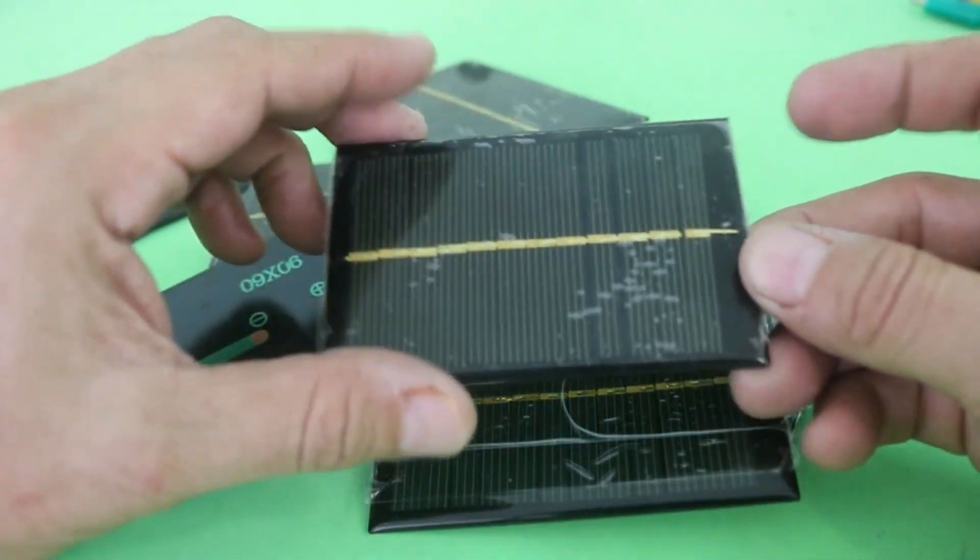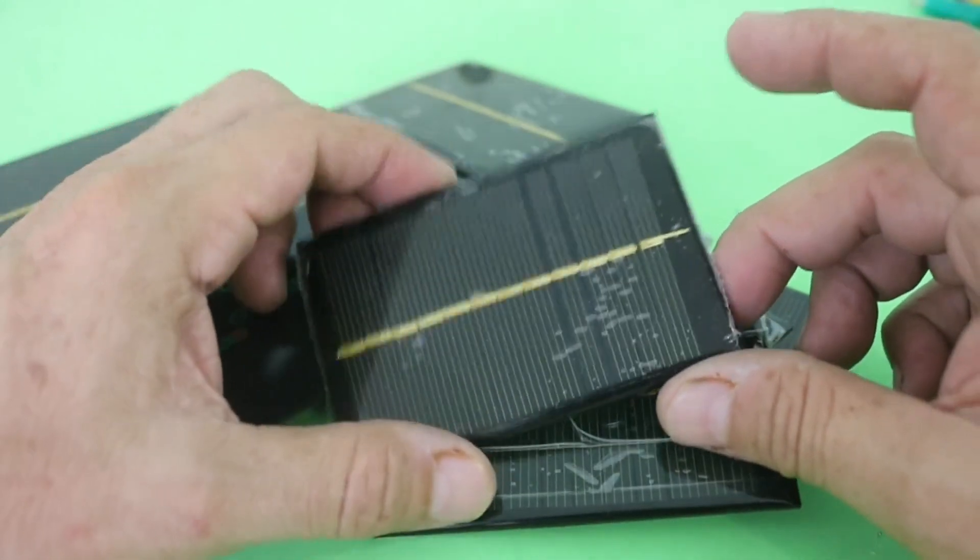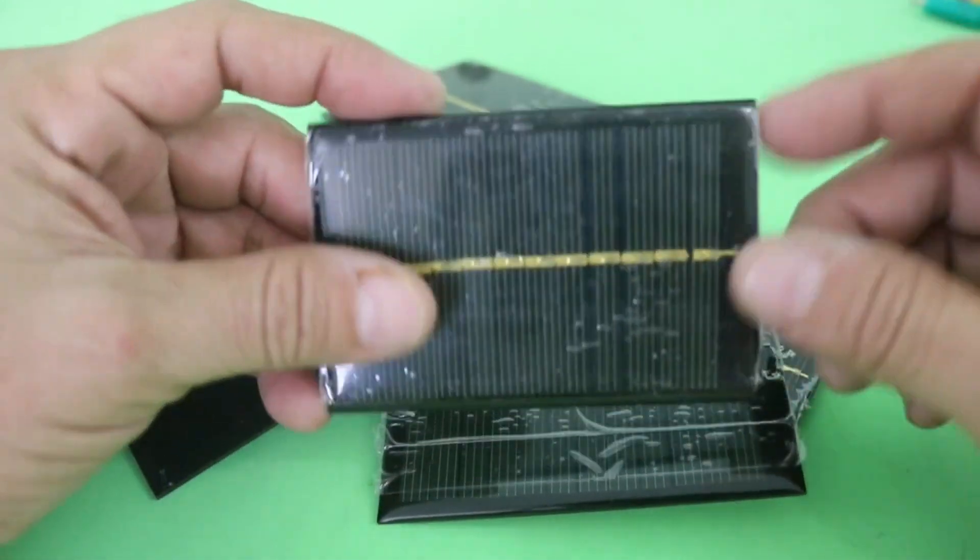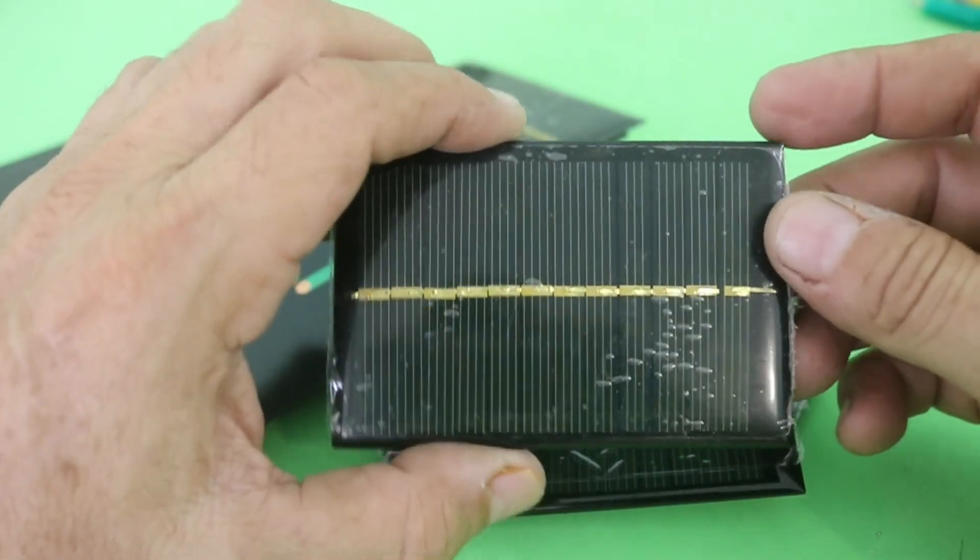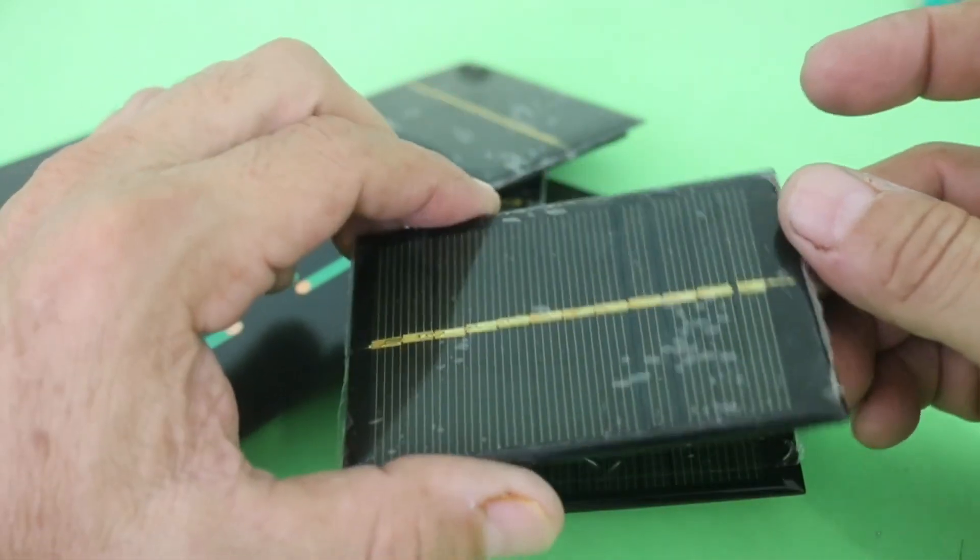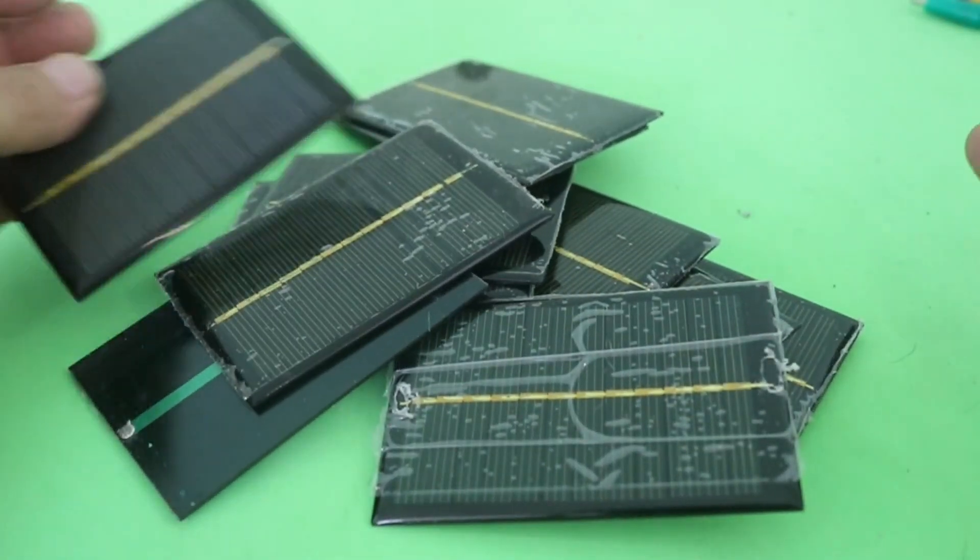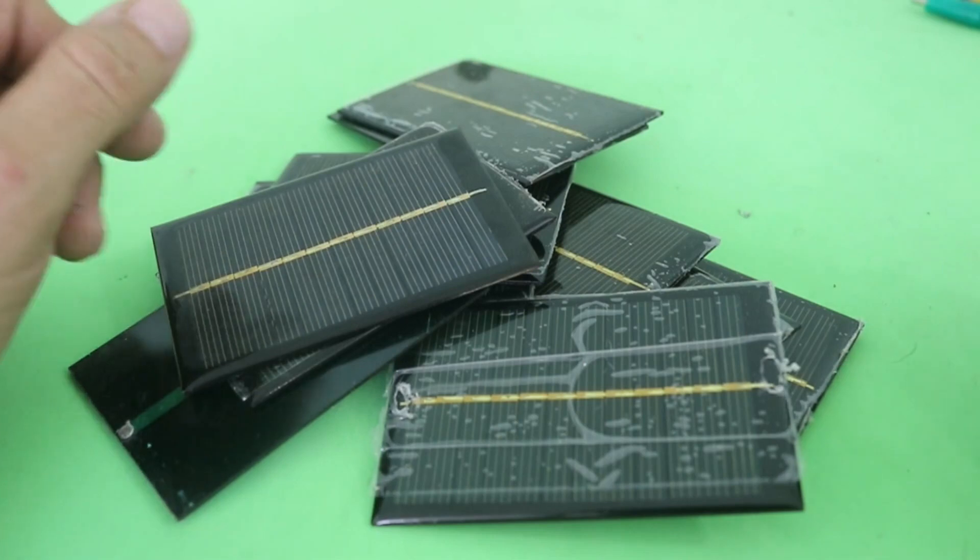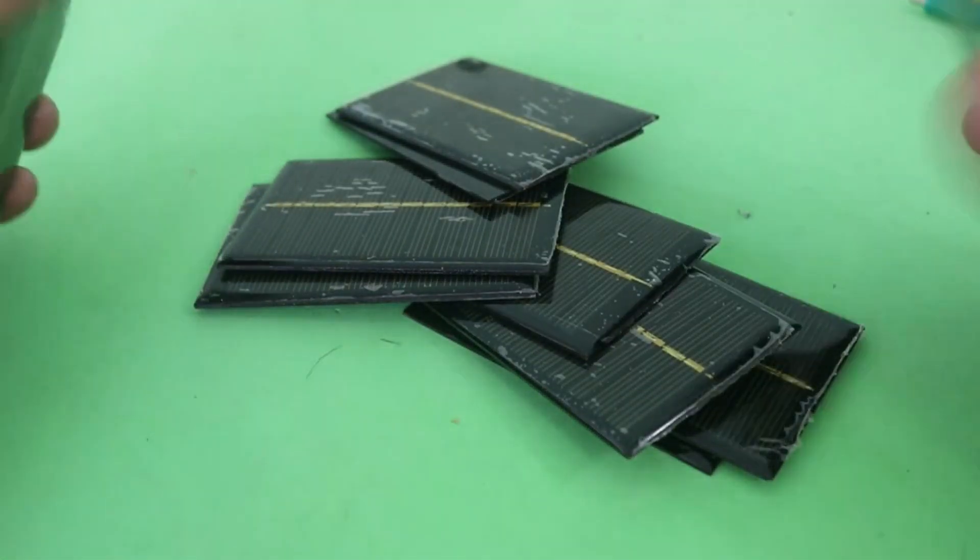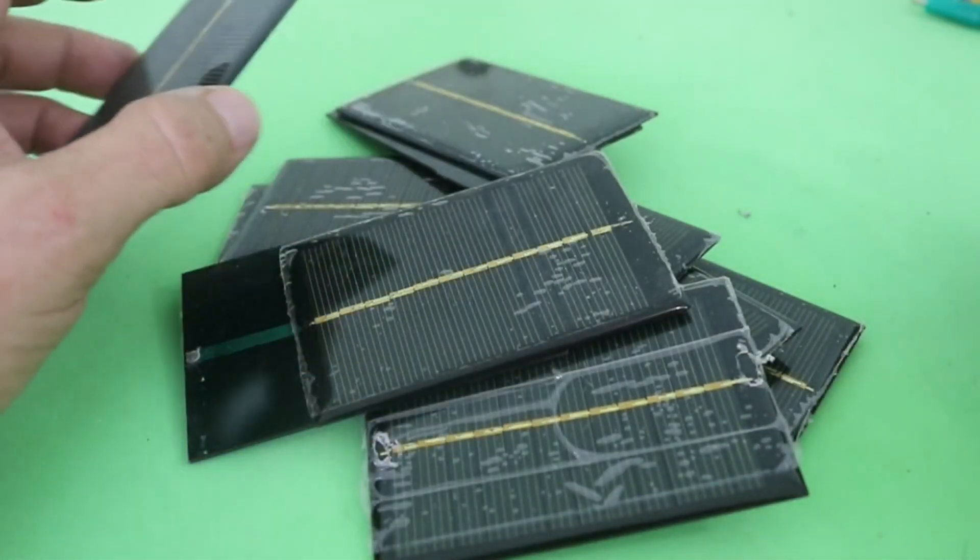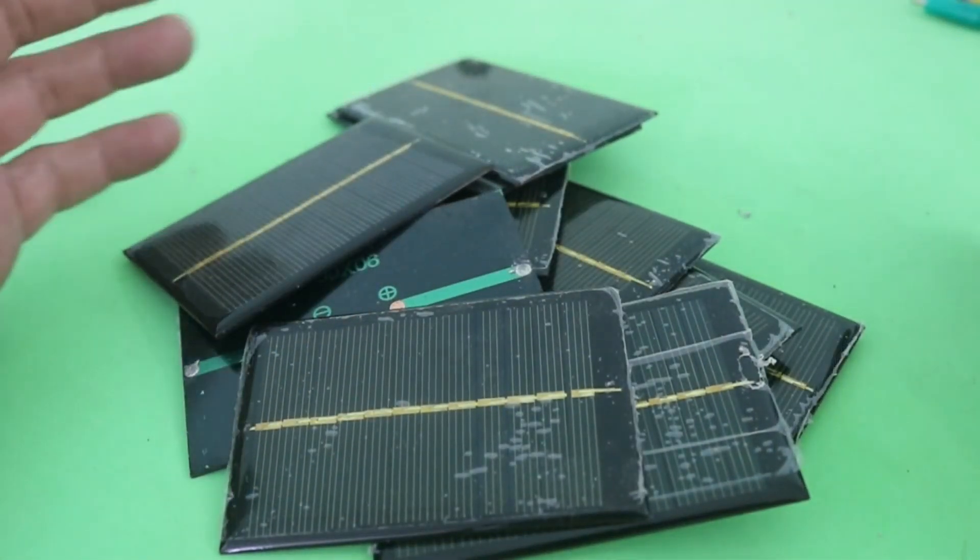I just checked them under full sun and each cell produces a little bit more than seven volts at open circuit and a current of around 250 milliamps in short circuit. So I want to make a small 12 volt solar panel. There are 12 cells so it is enough for a 12 volt panel and use the panel to charge 12 volt batteries.